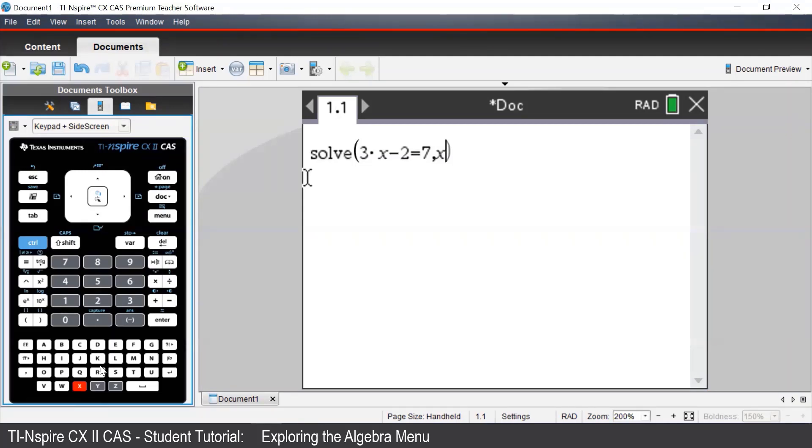Once we've typed it all in, we press enter. The way the TI-Inspire reads this is that we are solving 3x minus 2 equals 7 for the pronumeral x.